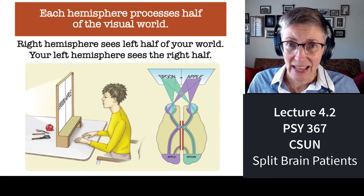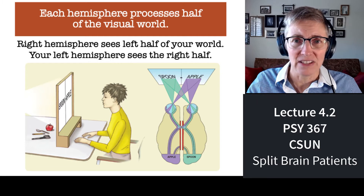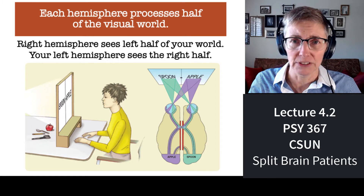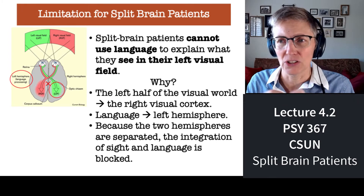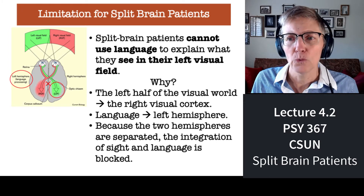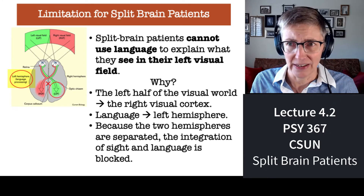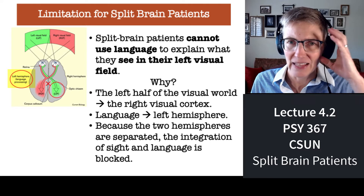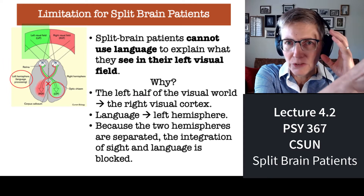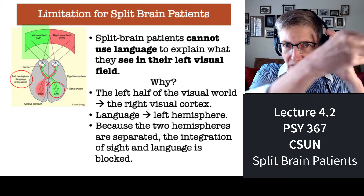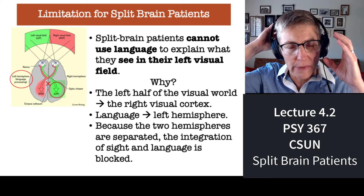Your left brain controls the right side of your body and analyzes what it sees from the right side of the world. But what happens when those two hemispheres can't talk to each other? Language is in the left hemisphere — at least for most right-handed people — and information seen in the left visual field goes to the right occipital lobe to be analyzed.